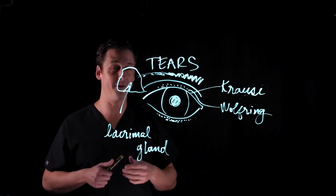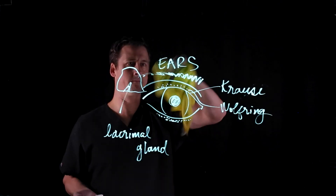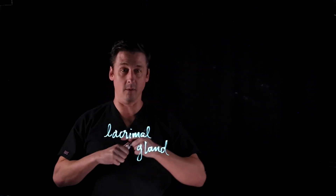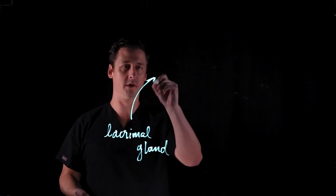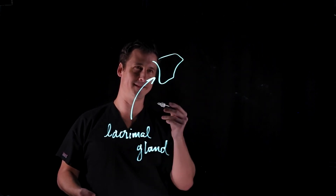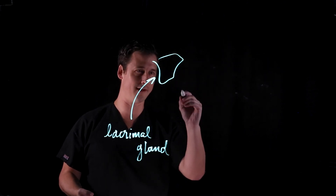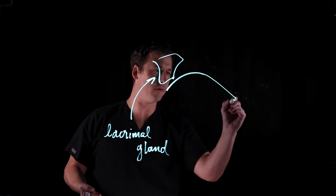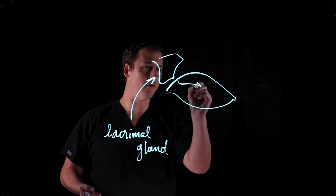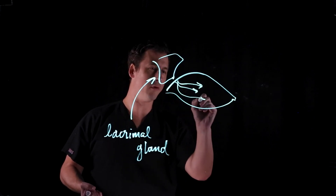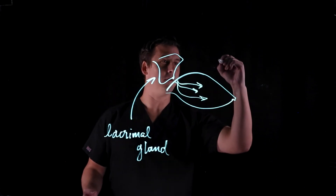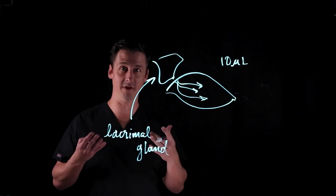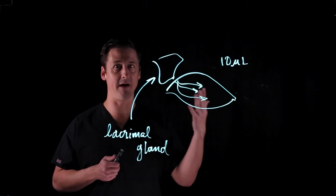Now what does this have to do with sniffles? So back to our lacrimal gland — here it is, this big guy. These tears pour out over the surface of your eye, and your eye can only hold about 10 microliters of fluid on it at any given time. That's not much — one drop of liquid is about 50 microliters of fluid, so one drop of tears is already five times more than your eye can hold.